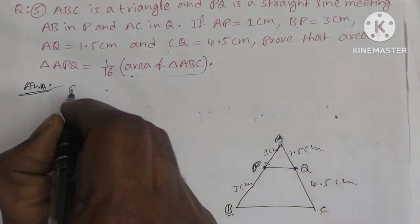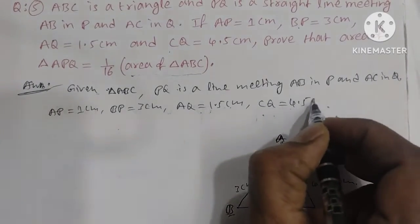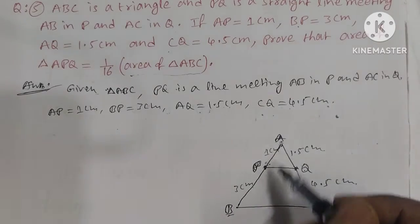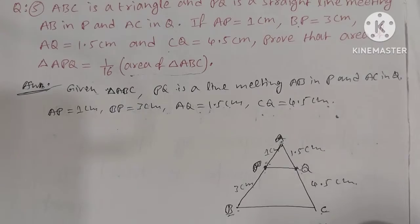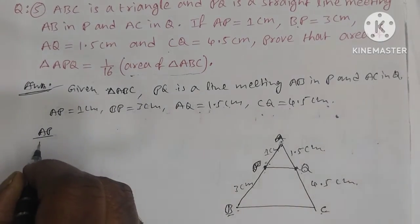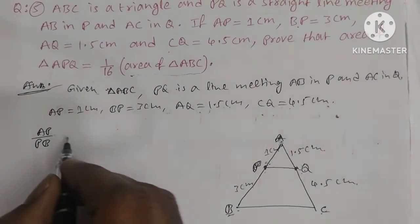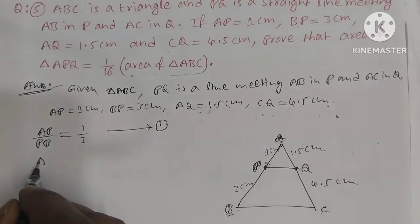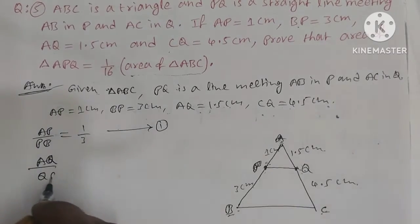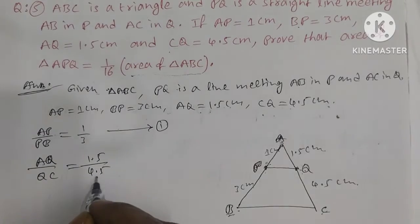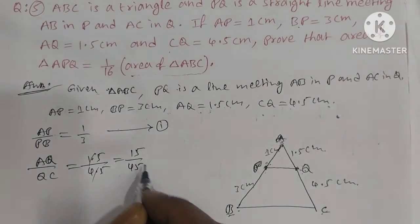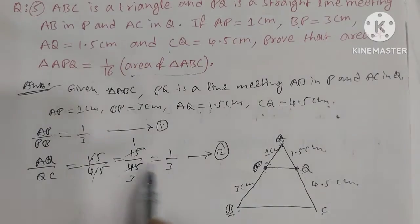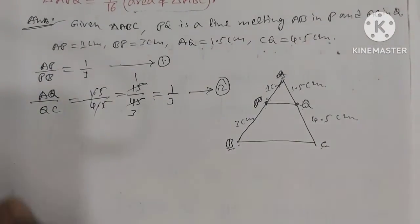We prove AP/PB = AQ/QC. AP/PB = 1/3 — this is equation 1. AQ/QC = 1.5/4.5 = 15/45 = 1/3 — this is equation 2. Both ratios are equal to 1/3, so the ratio is the same.